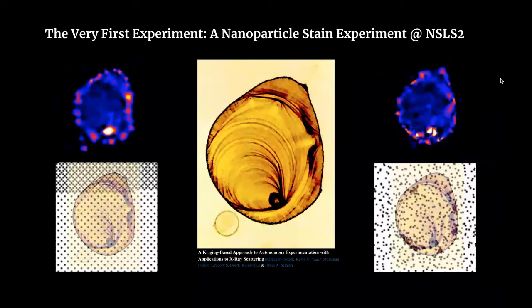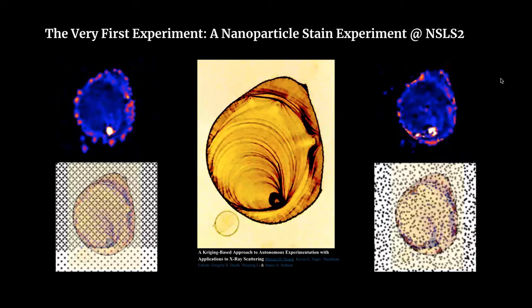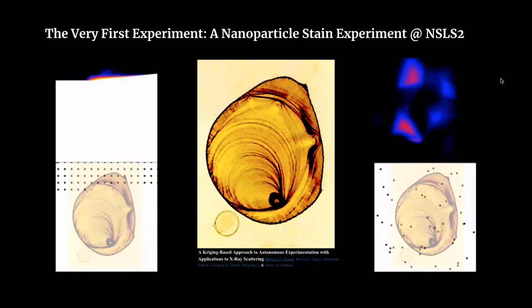What we see here is our very first experiment we ran at NSLS-2 in Brookhaven about three and a half years ago. What we have here in the middle is a nanoparticle stain, and on the right-hand side, this stain is explored using traditional raster scanning. This is a very typical technique when we are in low-dimensional spaces, like here with the two-dimensional parameter space.